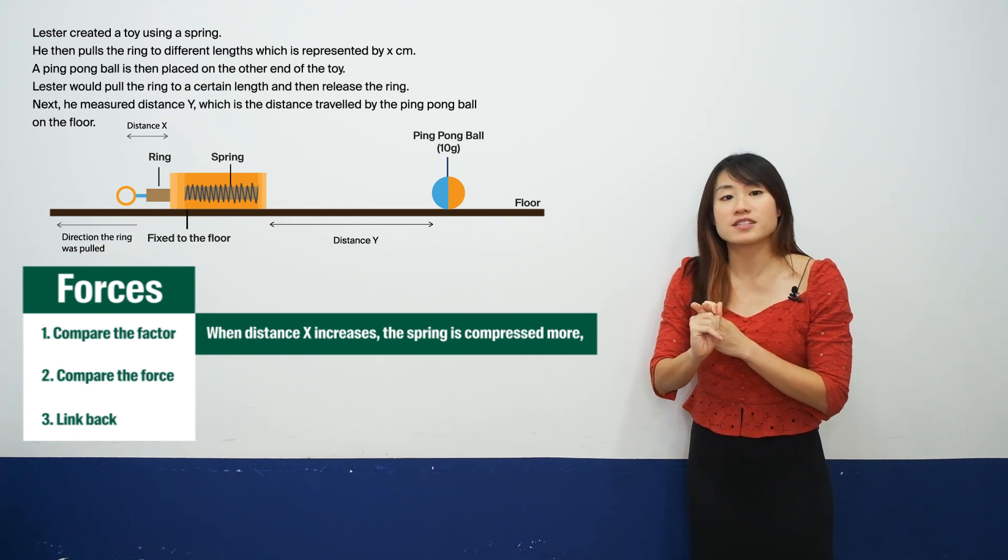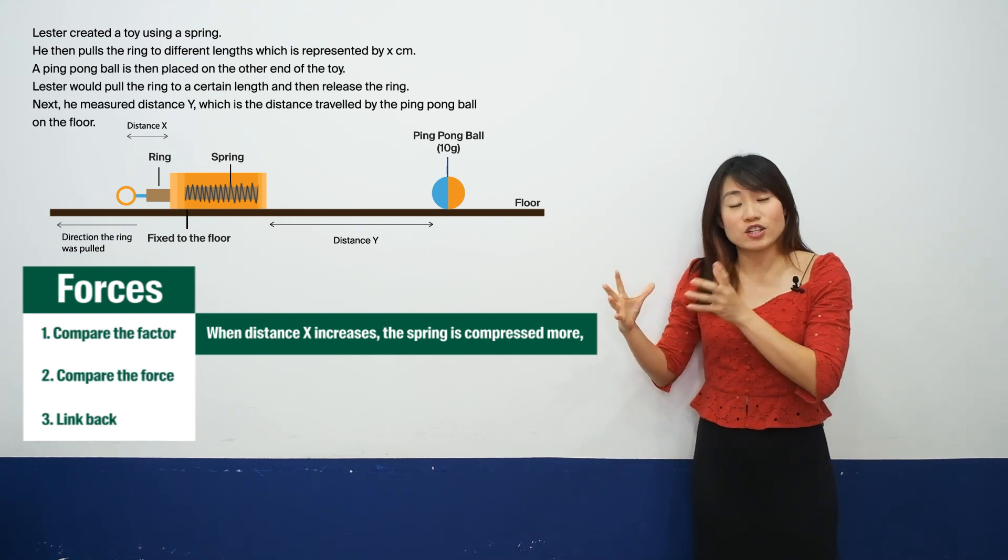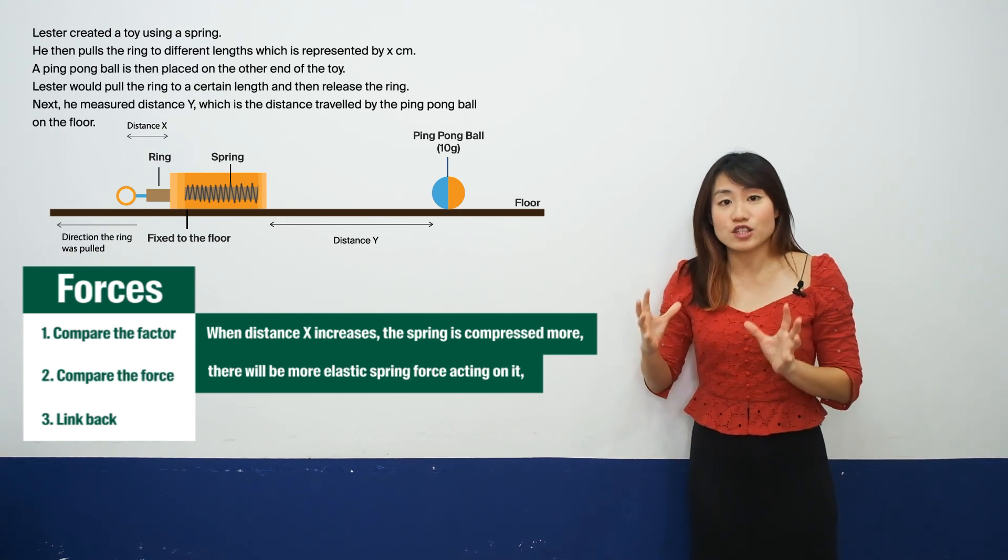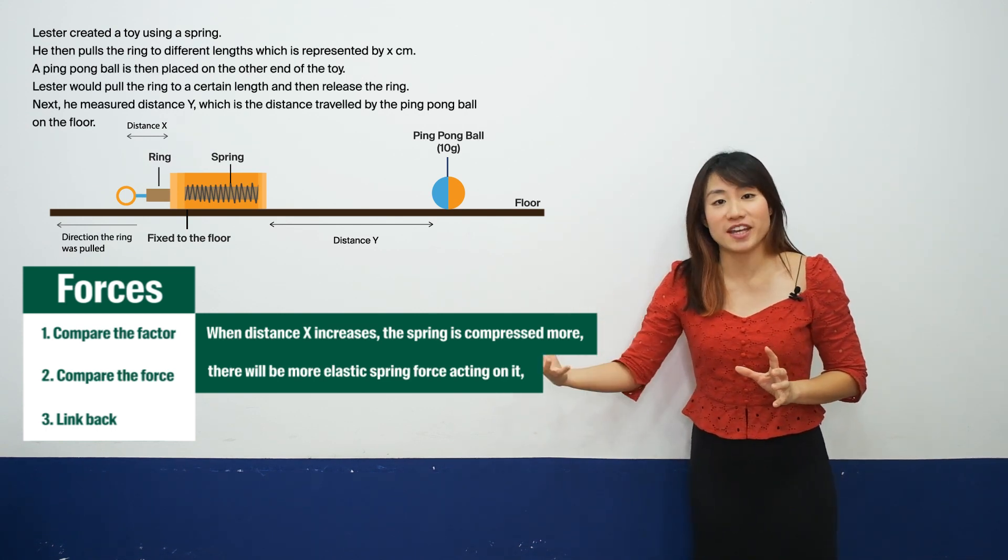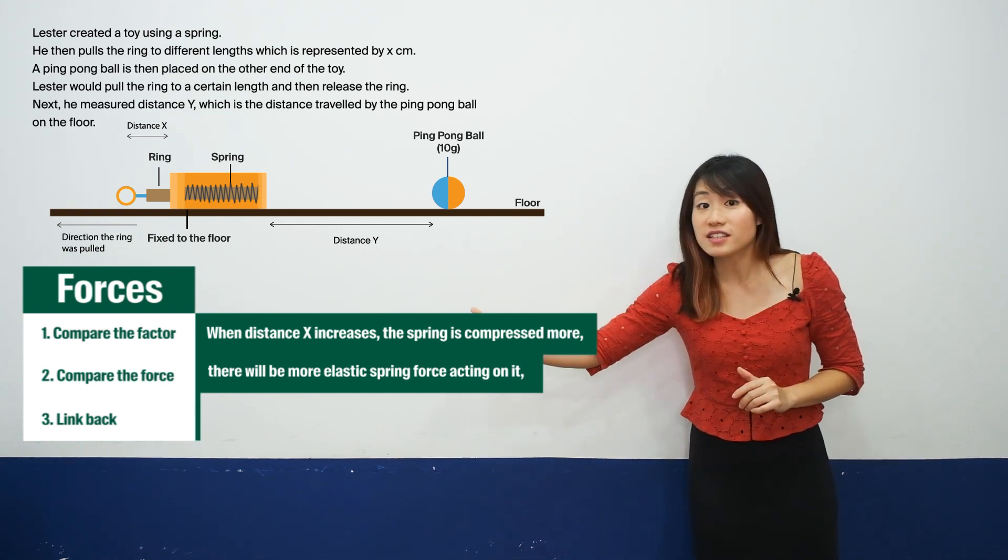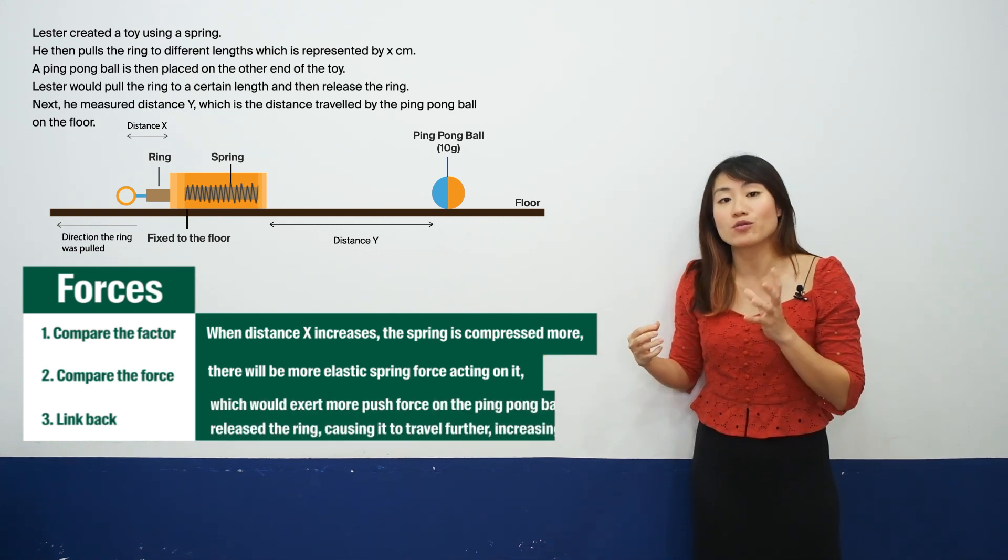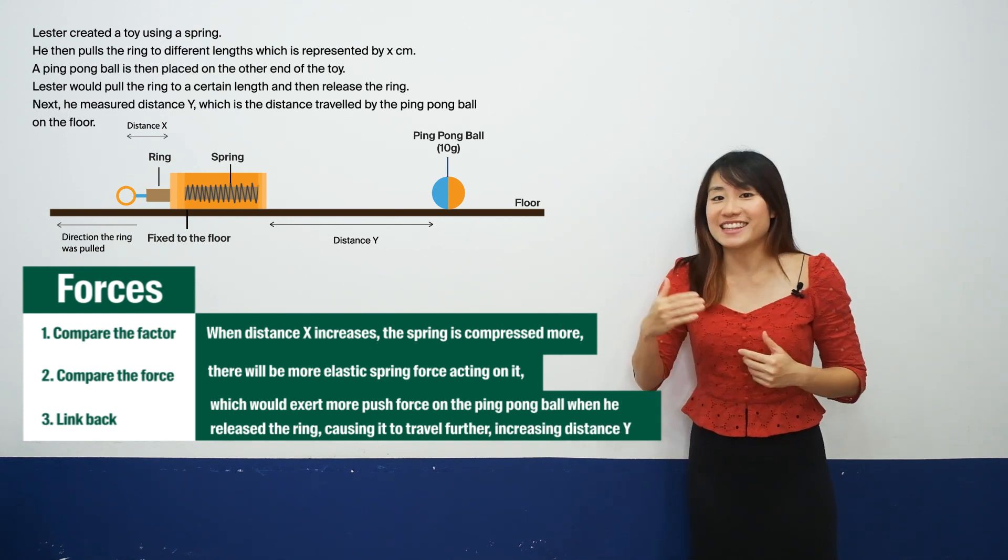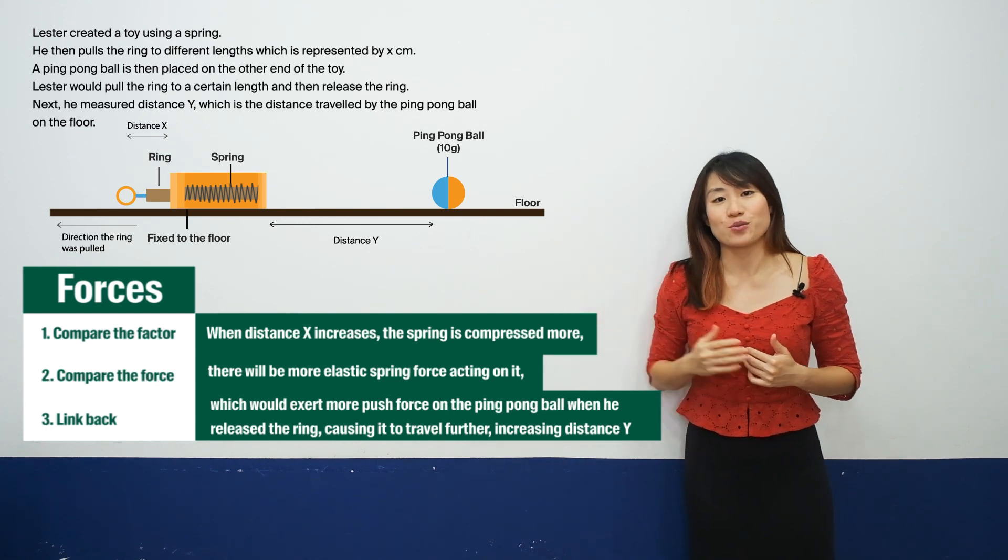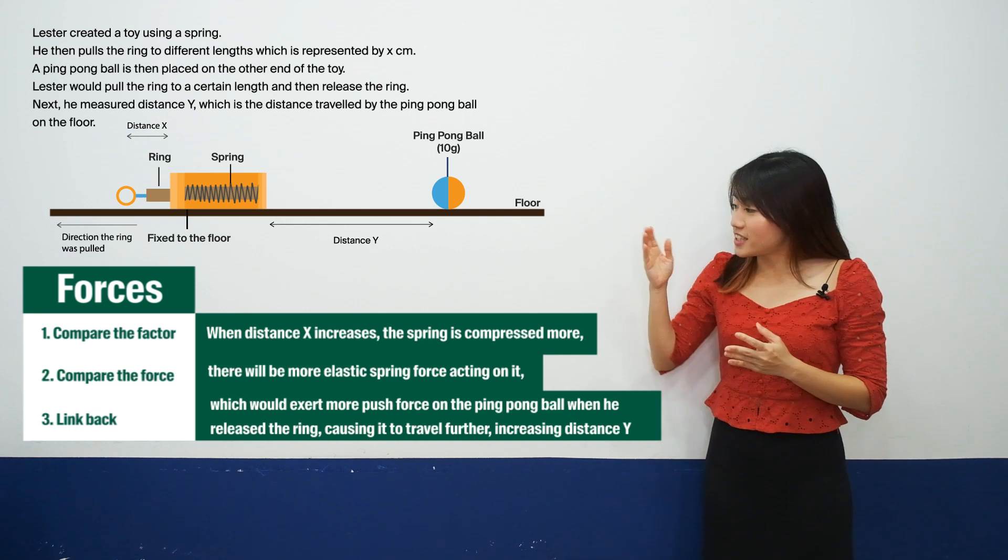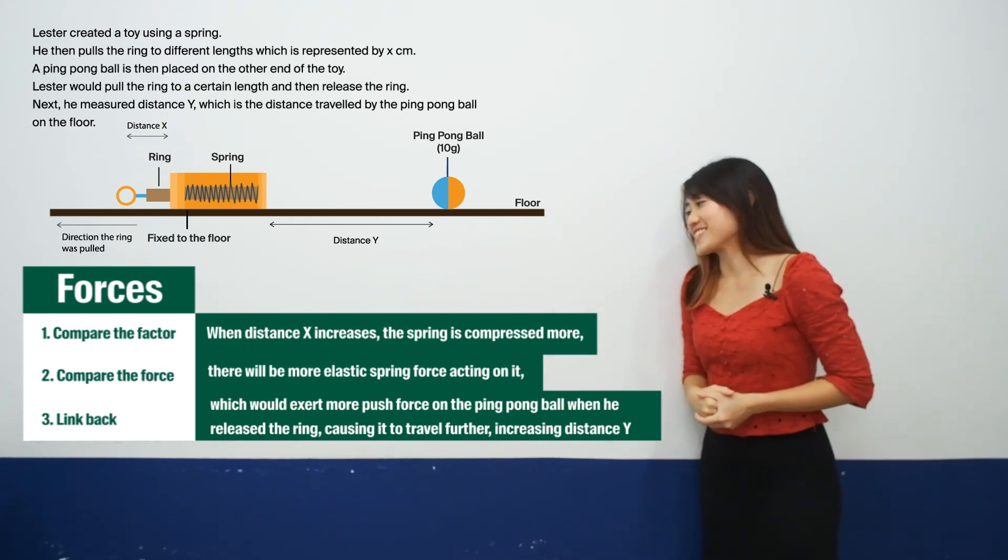Secondly, what is compare the force? We know that now that the spring compresses more, the spring would have more elastic spring force exerting on it. And finally, why would the ball be able to travel a further distance? It's because when you release the ring, the spring is going to exert more push force on the ball and this will increase distance Y. So once you have identified these three steps, here will be your final answer.